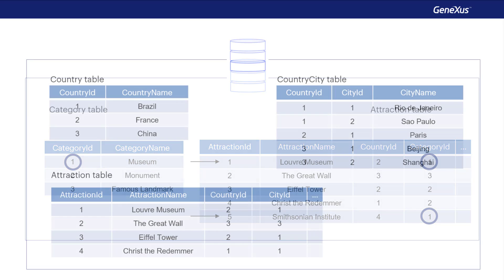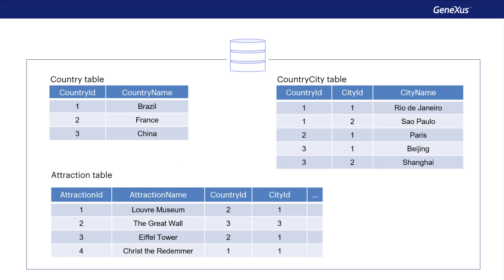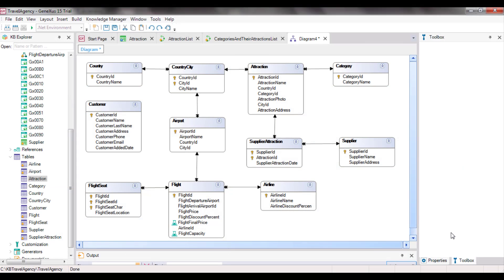This list is different from the one we saw before. In the previous list, we navigated Attractions, and since each Attraction has only one country, we could retrieve the name of each attraction's country because it was in the extended table of the base table we were navigating. As long as the information we want to retrieve is available in the extended table of the base table we're navigating, we can reference it directly in the forEach command.